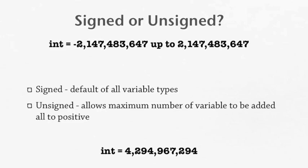Now if you're dealing with a really large number for some reason, you can make it unsigned int. And then that allows that maximum number of variables to be added all to the positive. So it's now 4,294,967,294. But that's only if you really need that maximum capacity is really the only time you'll be using the signed or unsigned.